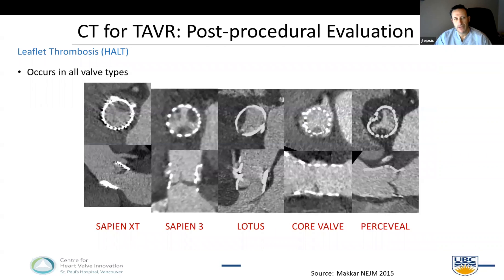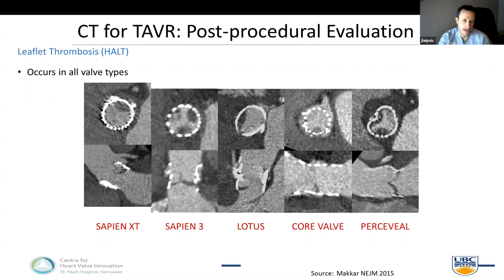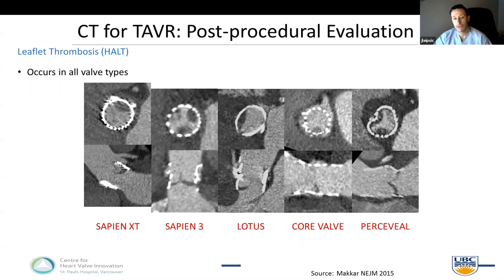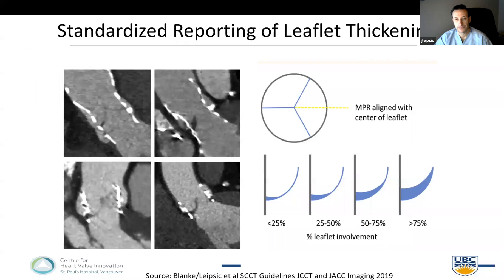For years now we've understood that HALT does occur. HALT is defined, as per the SCCT guidelines, as thickening of a leaflet starting at the base, extending to the tip, always thickest at the base and then thinning out towards the tip. It occurs in all bioprostheses — not just transcatheter ones but also surgical bioprosthetic valves. The frequency may vary across device types, but it's not a unique issue to TAVR. It is also seen in surgical valves from the Savory and Resolve registries led by groups from Copenhagen and Los Angeles.